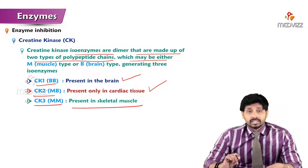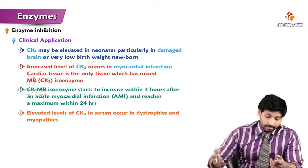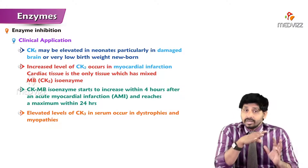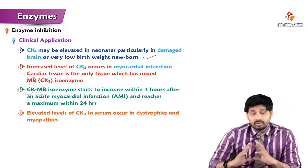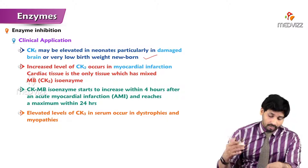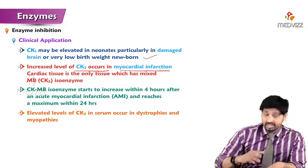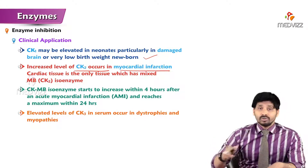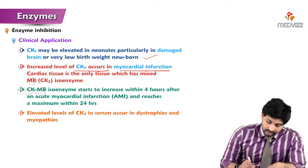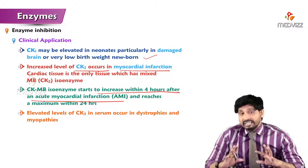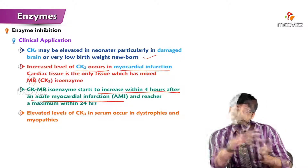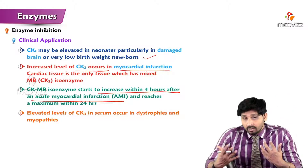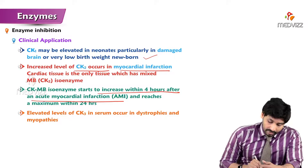Clinically, CK1 may be elevated in neonates, particularly in damaged brain or very low birth weight premature babies. Increased levels of CK2 occur in myocardial infarction along with LDH1. Importantly, the CKMB (CK2) isoenzyme starts to increase within four hours after acute myocardial infarction, whereas LDH1 takes 24 to 48 hours. Elevated CK3 in serum occurs in muscular dystrophies and myopathies, since CK3 is concentrated mainly in skeletal muscles.